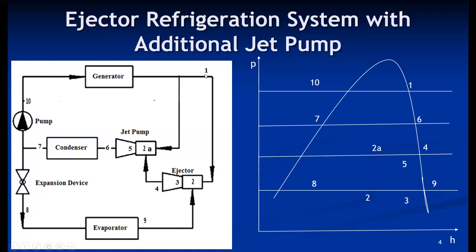We start from point number one, the outlet of the generator. From the generator, two streams are used — one goes to the jet pump and one goes to the ejector. In the ejector, the primary fluid expands isentropically from one to two. Similarly in the jet pump, expansion is also from one to two. So these are simultaneous expansions of the primary fluid in both ejectors. In the ejector, the secondary fluid from the evaporator mixes at point three, and from three to four, pressure rises in the diffuser section.